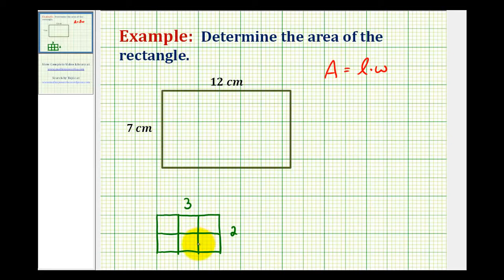An easier way to obtain the area would have been to multiply the length times the width, or two times three, to obtain the area of six square units. So looking at our rectangle, to determine the area of this rectangle, we'll multiply the length of seven centimeters and the width of 12 centimeters.